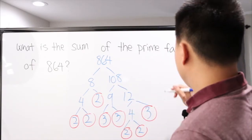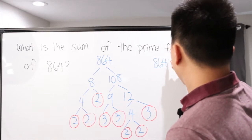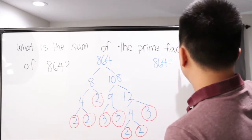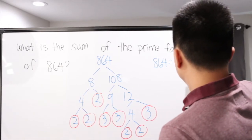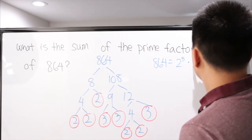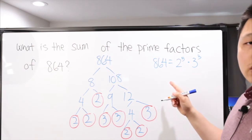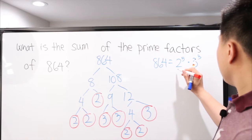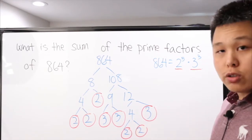Now we can rewrite it to make it easier on ourselves. 864 equals 2 multiplied by itself 5 times, so 2 to the 5th power, times 3 multiplied by itself 3 times, so 3 to the 3rd power. So 864 is equal to 2 to the 5th power times 3 to the 3rd power. The 2 and the 3 are our prime factors.